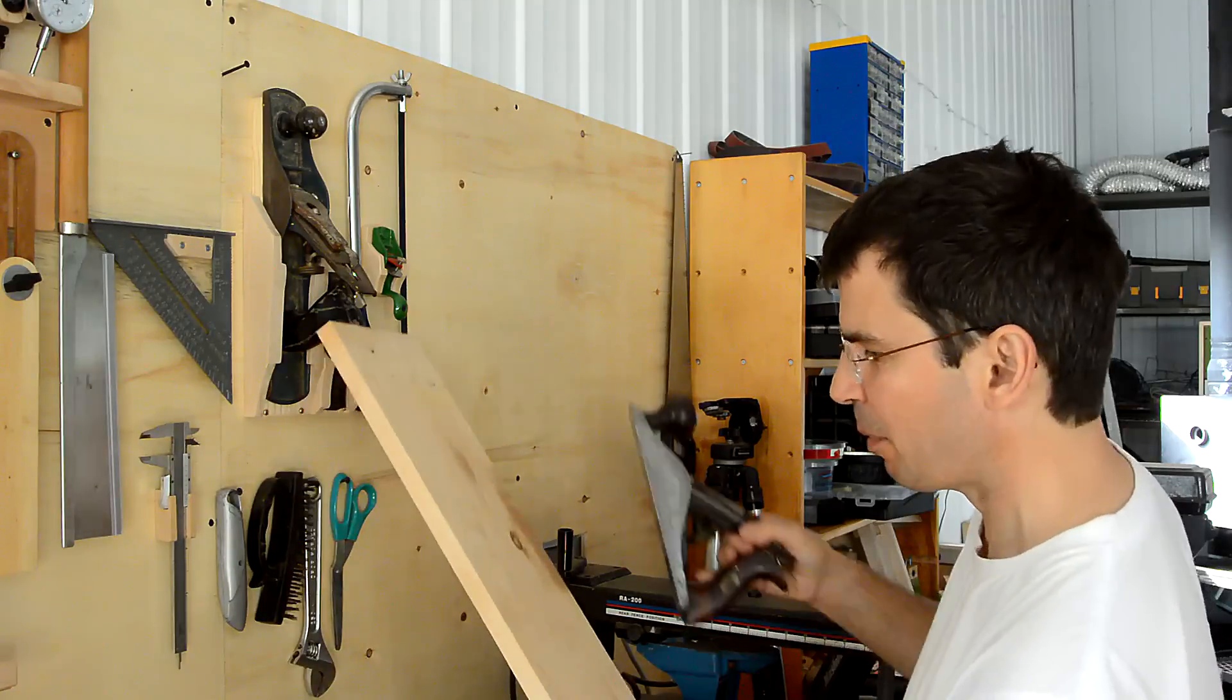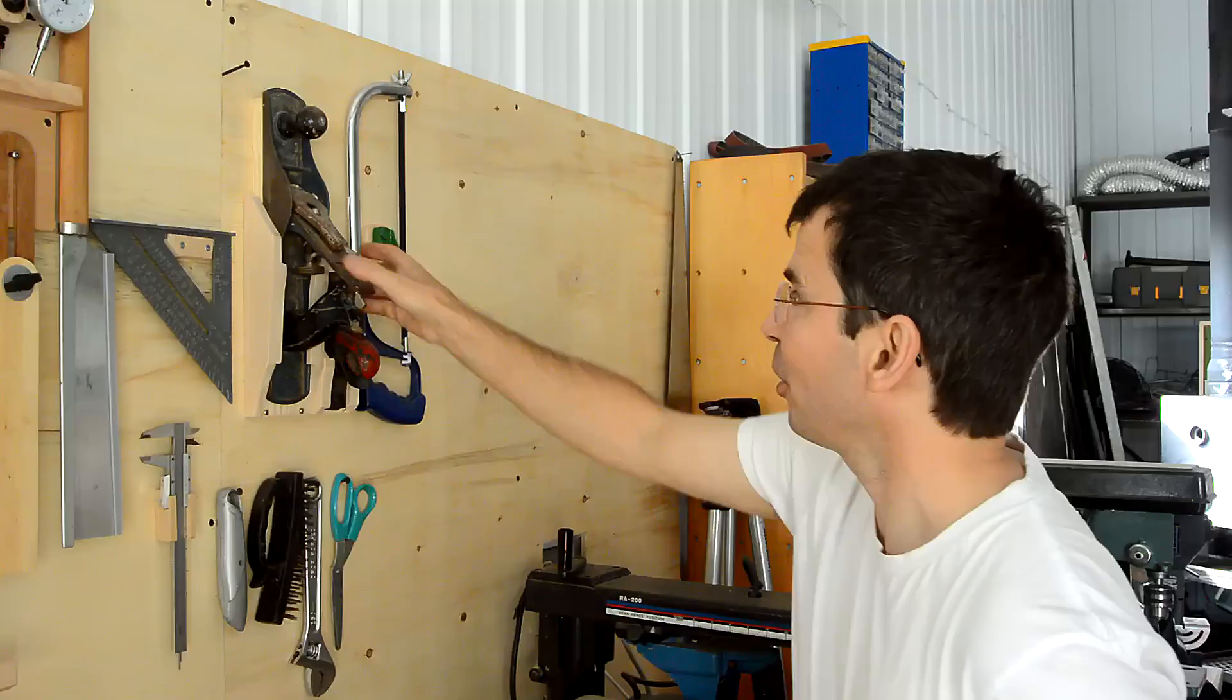A lot of people use inclined shelves like this to hold hand planes, and that keeps them from tipping off like this. I've always preferred to put them vertically in a holster like this, but that means I need room above.